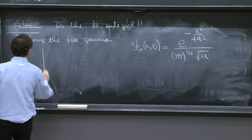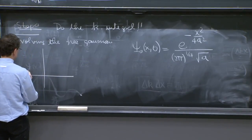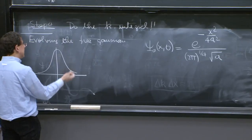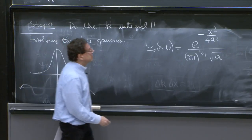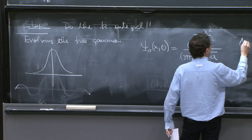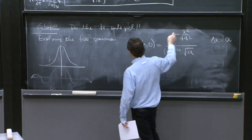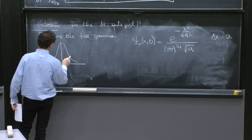And so what is this? This is a Gaussian, and the uncertainty is roughly a. Is that right? Δx is about a because that controls the width of the Gaussian.